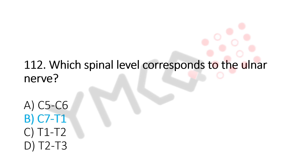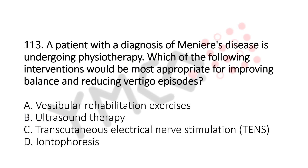Now let's move to question number 113. A patient with a diagnosis of Meniere's disease is undergoing physiotherapy. Which of the following interventions would be the most appropriate for improving balance and reducing vertigo episodes? Option A, vestibular rehabilitation exercises. Option B, ultrasound therapy. Option C, transcutaneous electrical nerve stimulation. Option D, iontophoresis. And the answer is Option A, vestibular rehabilitation exercises.